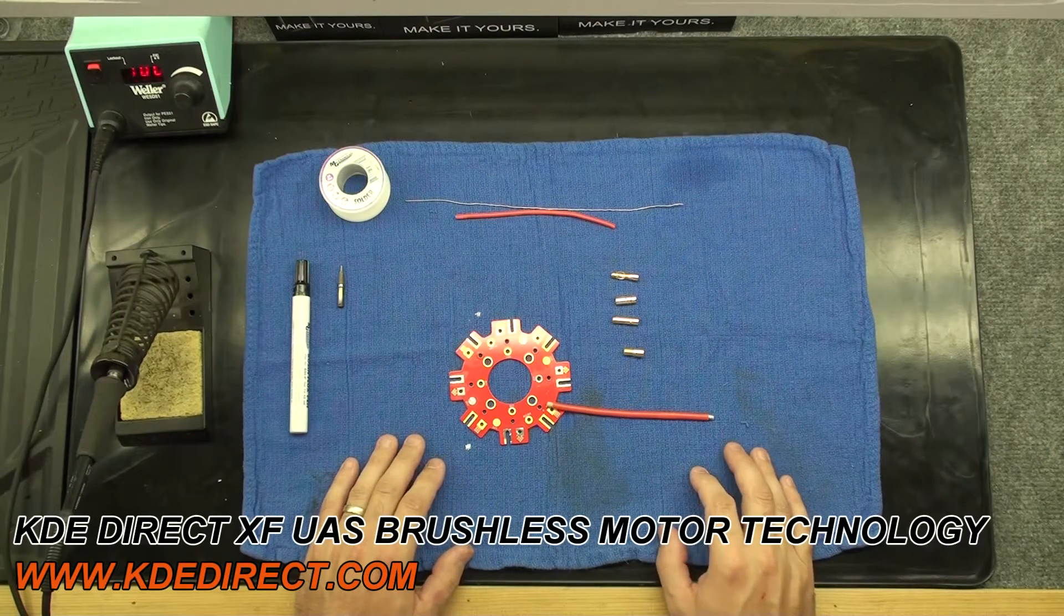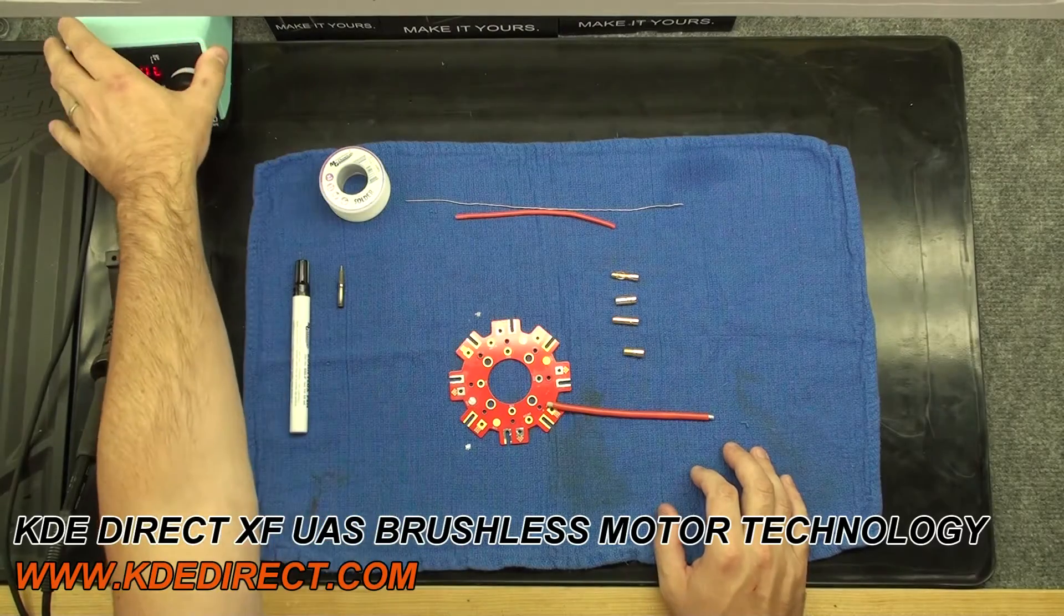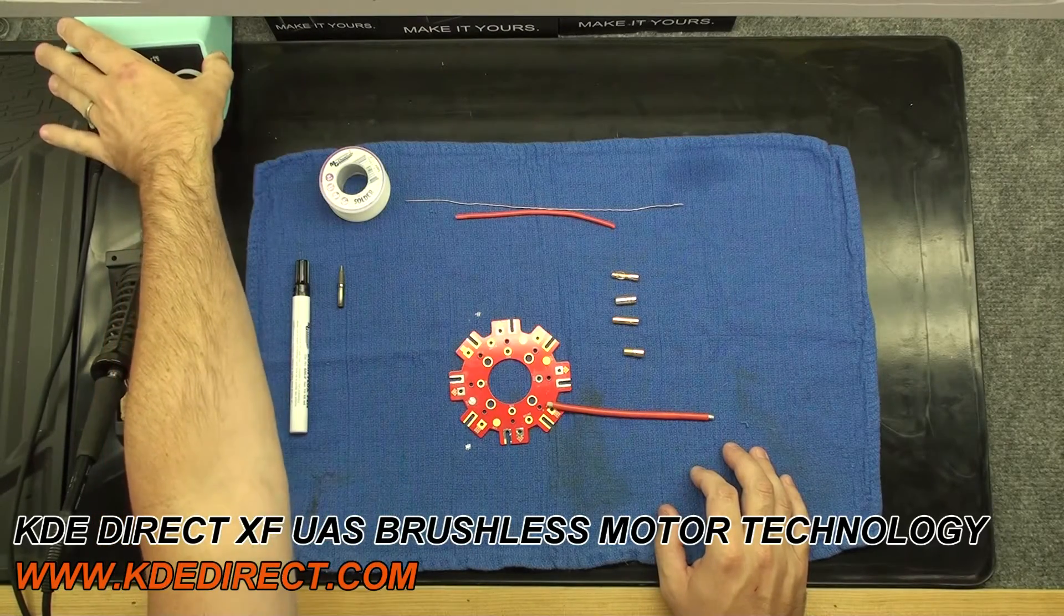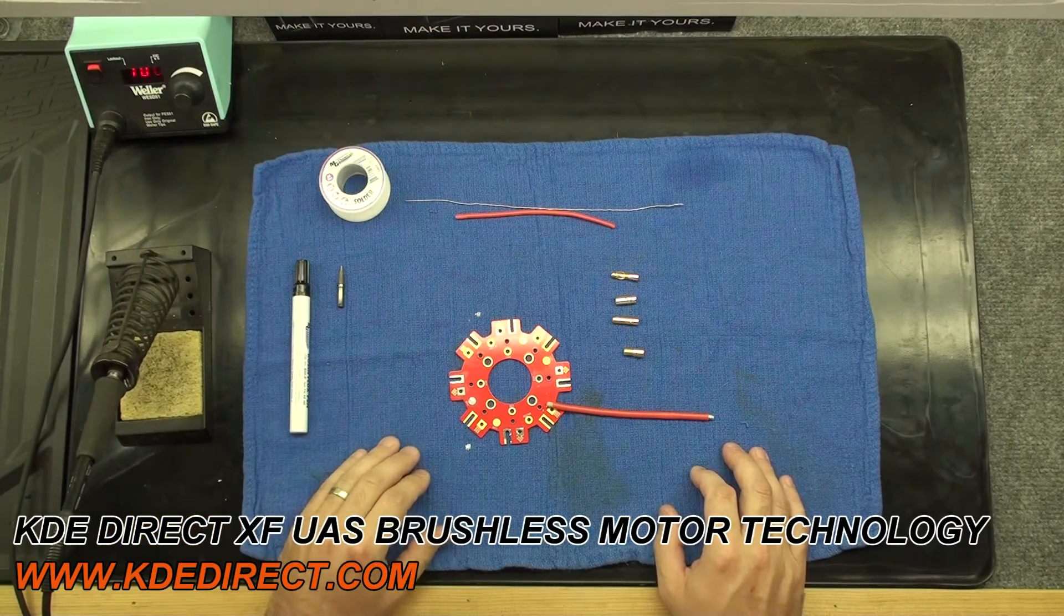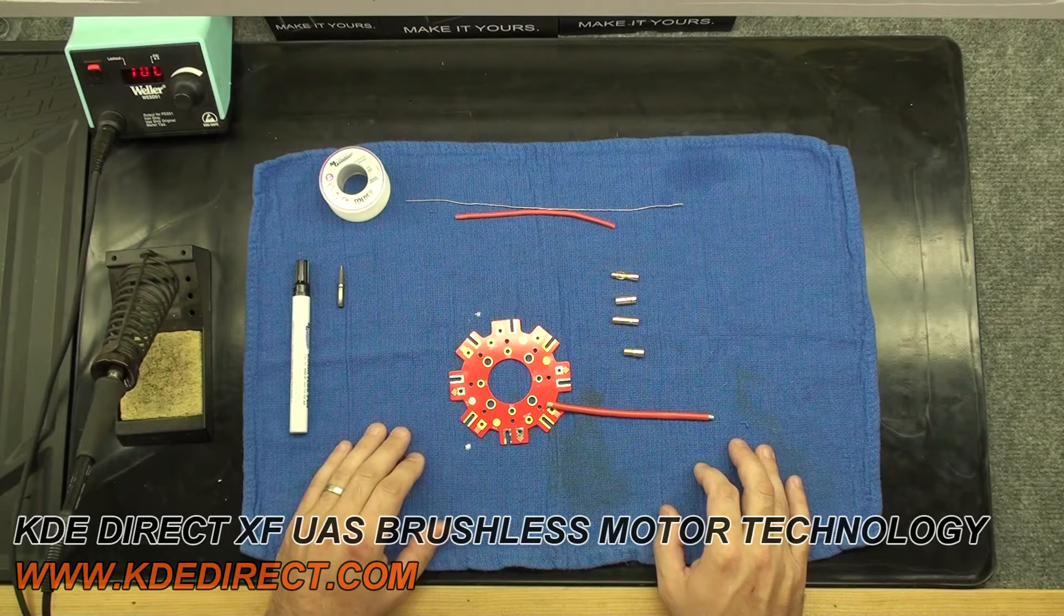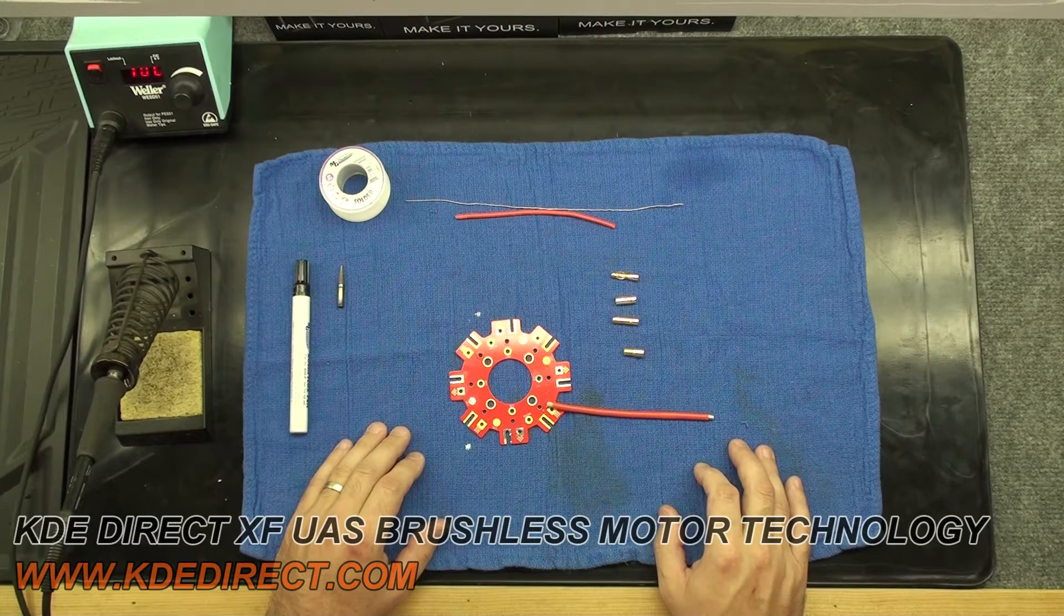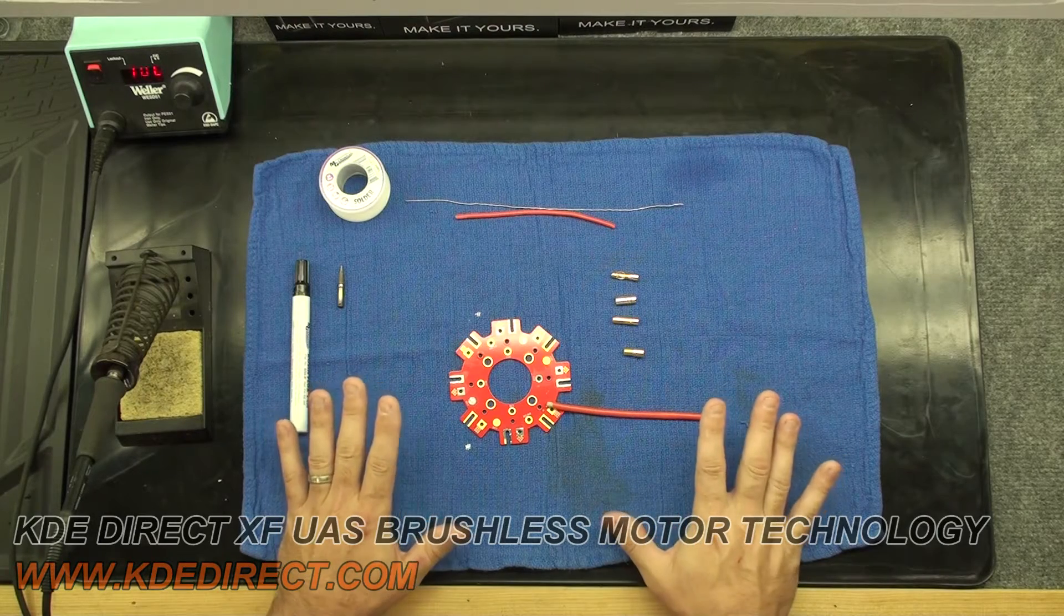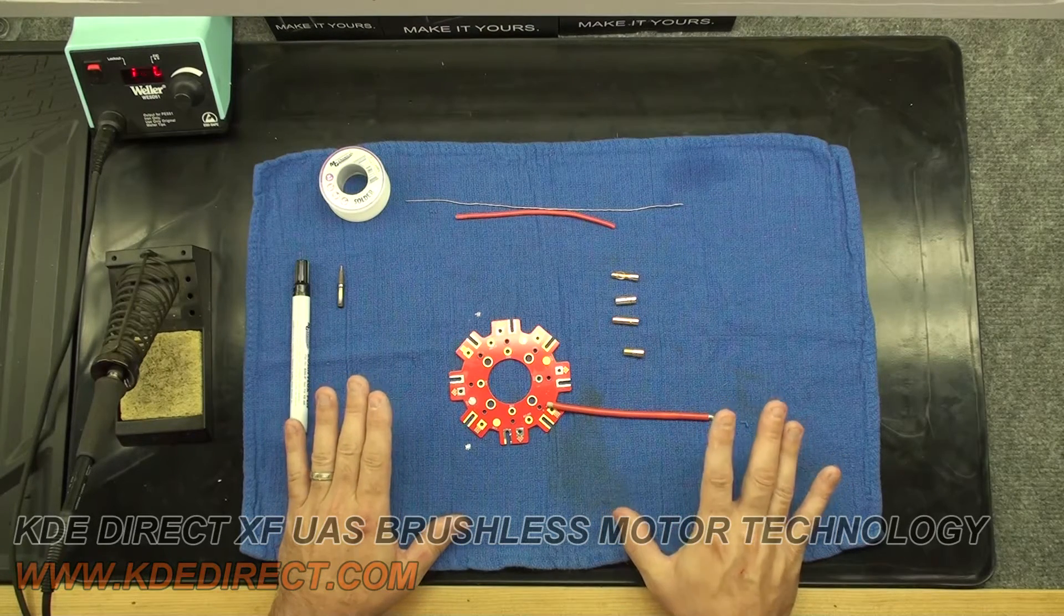First we'll go over the tools being used today. Our soldering iron being used is a Weller 60 watt 120 volt that can reach temperatures of 850F. You need a good soldering iron that can provide correct temperatures for the materials you're trying to solder. Take your time and choose the correct tool for the right job.